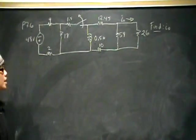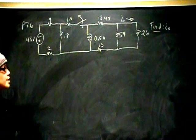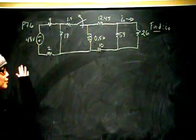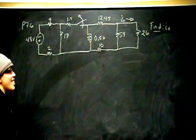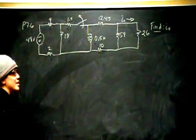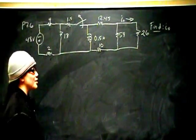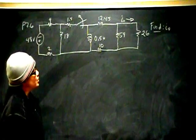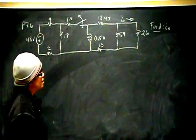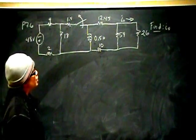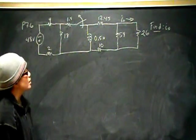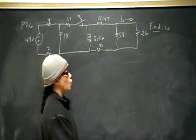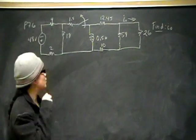And what we're trying to find is the current through the 26 ohm resistor. Somebody's staring at me filming, that's really awkward. Okay, so we're looking for the current through the 26 ohm resistor. That is what we're seeking.